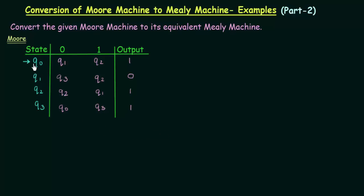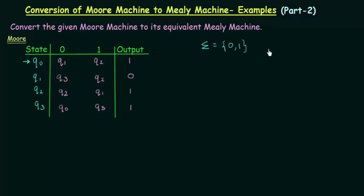Here let's see this Moore machine. We have states Q0, Q1, Q2, and Q3. The inputs are 0 and 1, and these are the states to which these states go on getting inputs 0 and 1. The outputs are also 0's and 1's. So in this example, our inputs are 0's and 1's, and outputs are also 0's and 1's.